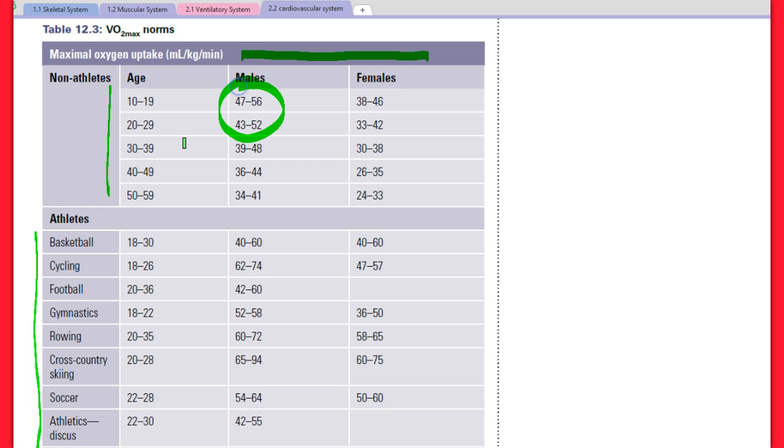Relative VO2 max will continue to increase as you grow and mature. For most males, that's going to be early 20s. For females, it's more likely to be late teens. Because we've got quite a large age bracket here, it doesn't quite show that it's more likely to be in our early 20s that it's at its highest. From that point on, it decreases by around about 1% per year.